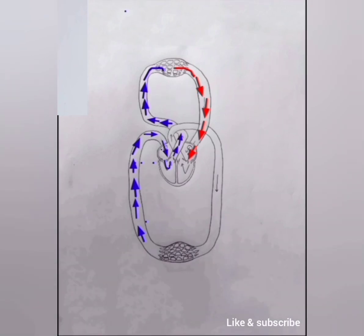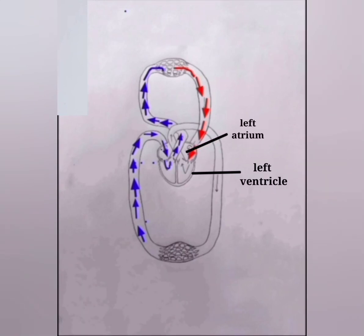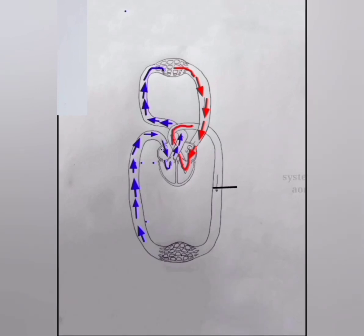Now let's look at the systemic circulation. Systemic circulation starts from the left ventricle. The left ventricle receives oxygenated blood from the left atrium. Once the left ventricle fills with blood, it contracts, forcing the aortic valve open and blood is pumped into the aorta and from there around the body.